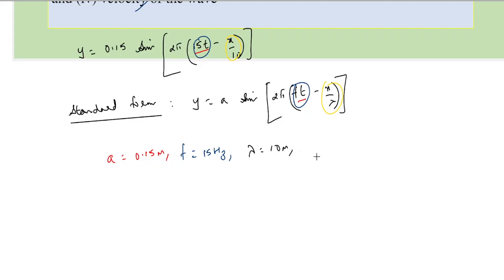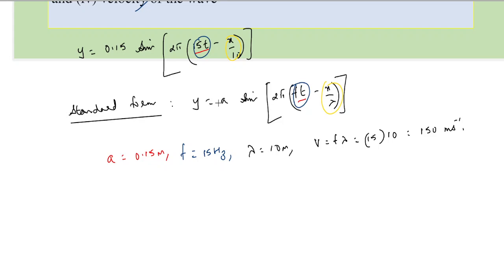For velocity, recall that wave velocity is given as v = f × λ. Here f is 15 Hz and λ is 10 meters, so v = 15 × 10 = 150 meters per second. These are the required answers.